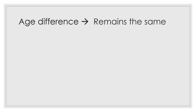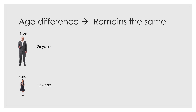We're going to look at a problem related to age. Let's assume there are two people: Tom, who is 26 years old, and Sarah, who is 12 years old. The difference in their ages is 26 minus 12, which gives us 14 years.